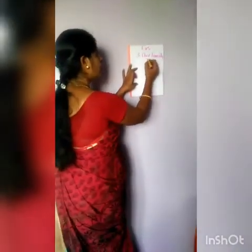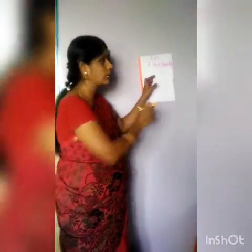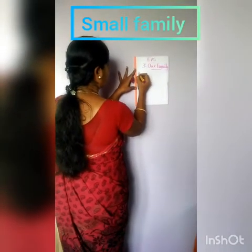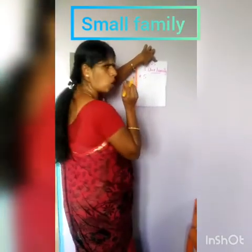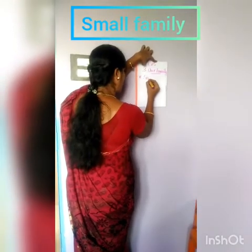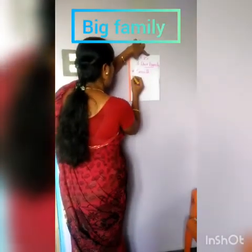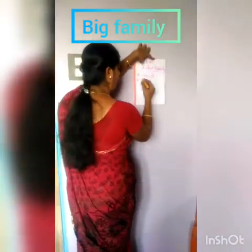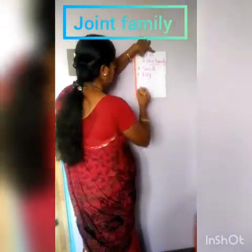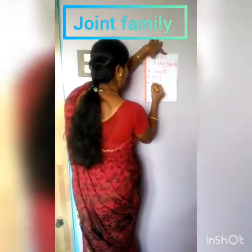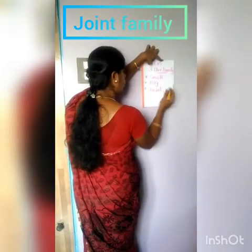See children, in this topic we are going to see three kinds of family. The first kind: small family. The second one: big family. B-I-G, big family. And the last one: joint family. J-O-I-N-T, joint family.